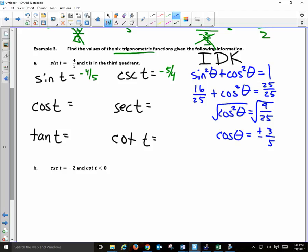Third quadrant. So tangent's positive and cotangent will be positive. But cosine and secant will be negative. So I have negative 3 fifths. So therefore, negative 5 thirds.